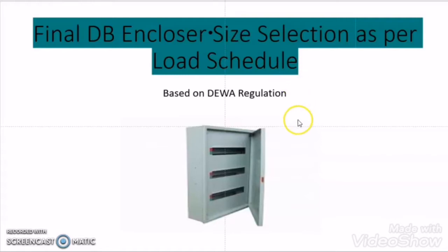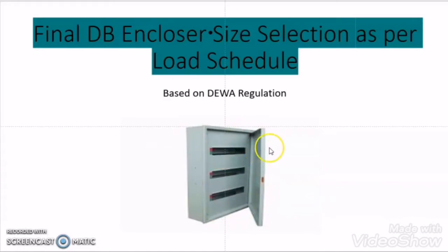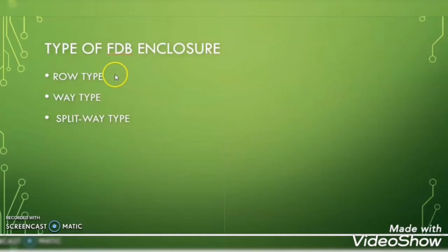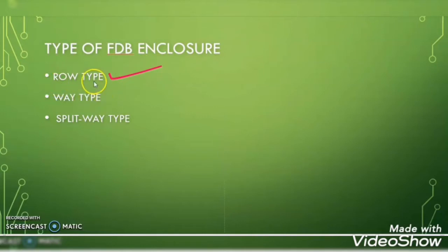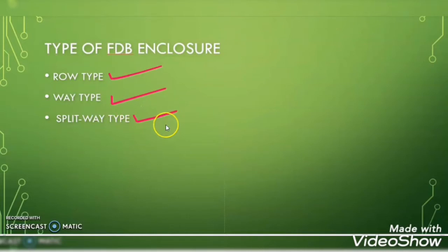In my previous video, I have explained that there are three types of final distribution board enclosure based on the breaker arrangement. The first one is row type, second one is way type, and third one is split way type.